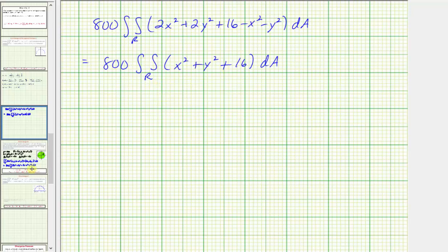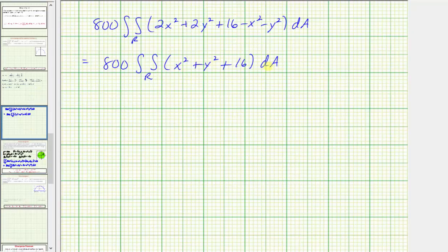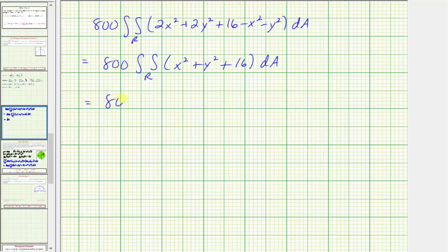Now let's go back and take a look at the region R. The region R is this circle centered at the origin with a radius of 4. Let's evaluate this using polar coordinates, where differential A equals R dR d theta and x squared plus y squared equals R squared. We have 800 times the double integral of R squared plus 16, R dR d theta. Limits of integration for R would be from 0 to 4, and for theta from 0 to 2 pi.